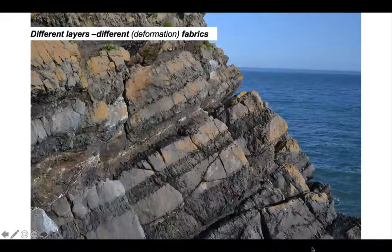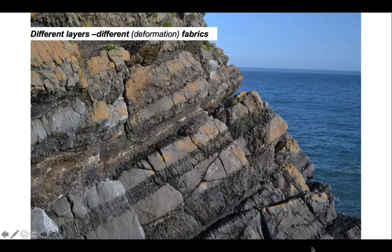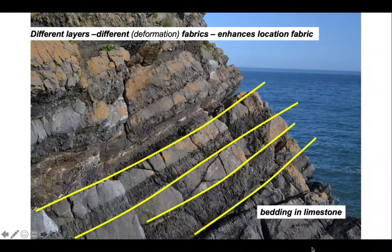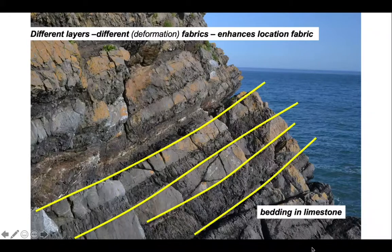Here's another example from southwest Wales. This is all limestone, but some parts of the limestone have picked up a shape fabric and they are the slightly more broken components. Other parts which don't have the fabric look more intact, and the boundaries between those are running like this. So the location fabric is being enhanced by the shape fabric, and consequently the deformation is allowing us to see bedding — the location fabric — in these limestones more easily.